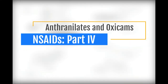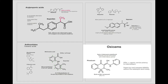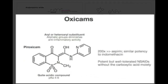Piroxicam doesn't have a carboxylic acid. It doesn't have a carboxylic acid — so what does it have instead? You have a thia group. What else does it have? So what substitute do they have for the acid?